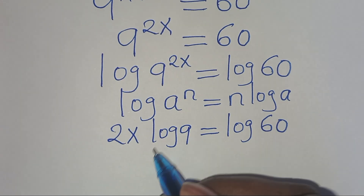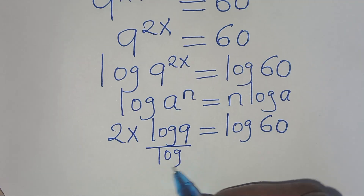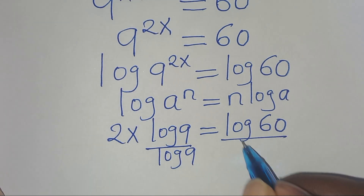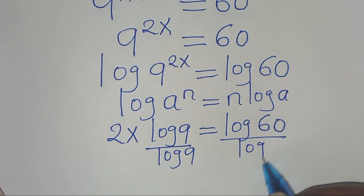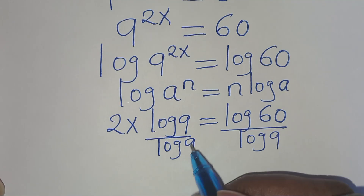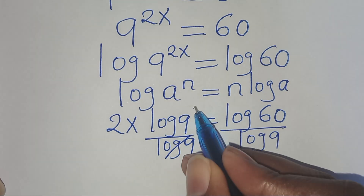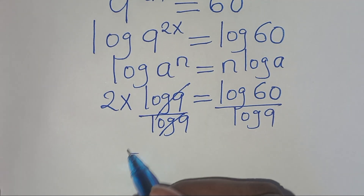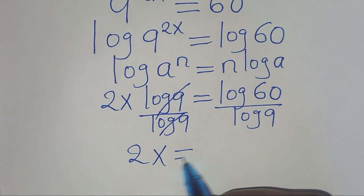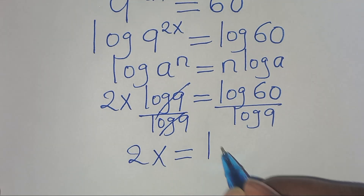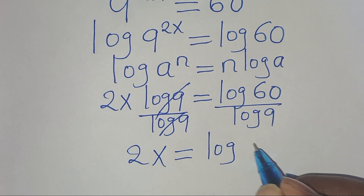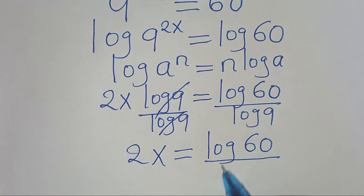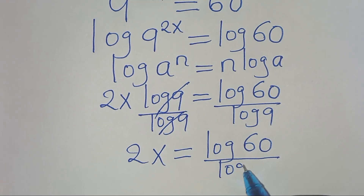So let's divide both sides by log 9 — we also have log 9 on the left side. By simplifying, this implies we have 2x, and this is equal to log 60 divided by log 9.